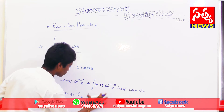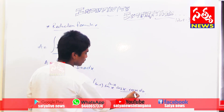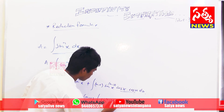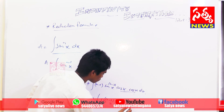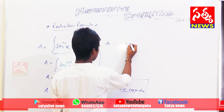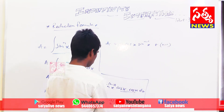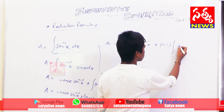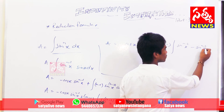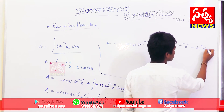We get: minus cos x · sin^(n-1)(x) plus (n-1), taken outside as a constant, times the integration of cos²(x) · sin^(n-2)(x). Now, cos²(x) can be written as 1 minus sin²(x) using trigonometry. So we have (n-1) times the integration of sin^(n-2)(x) into (1 minus sin²(x)). Expanding the bracket, sin^(n-2)(x) minus sin^n(x).